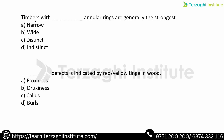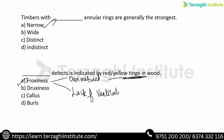Timbers with narrow annular rings are generally the strongest. We already know that narrower, straight, perpendicular grains are strongest; wider or non-perpendicular grains are weakest. Froxiness occurs in over-matured trees. Important causes of froxiness include over-maturity of timber and lack of ventilation. Froxiness gives a red or yellow tinge to the timber.